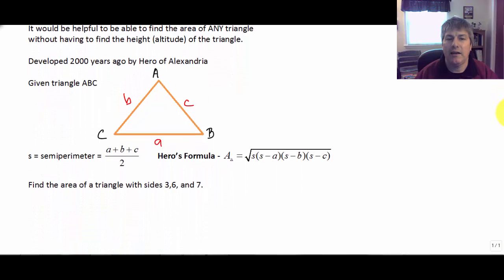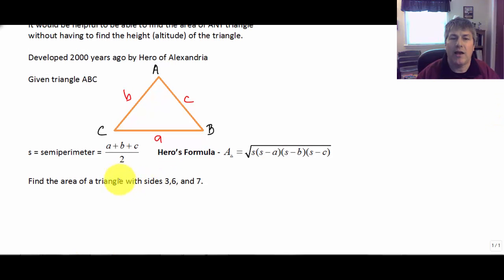So if we want to find the area of a triangle with sides 3, 6, and 7, and it doesn't really matter where the 3, the 6, and the 7 are. Well first we need to do is calculate the semi-perimeter. So 3 plus 6 plus 7 all over 2 equals 16 over 2 which is 8. So our semi-perimeter is 8. And then substituting that into Hero's Formula.